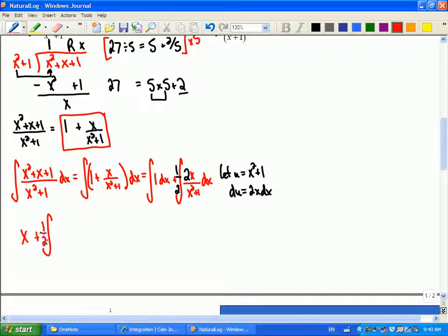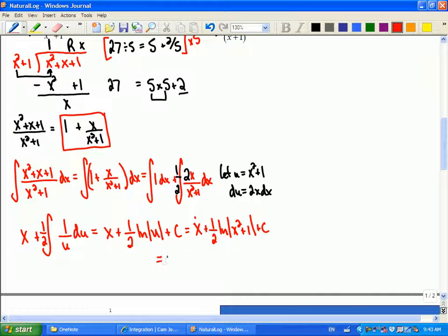So here I'm going to put a 2x, and I need a 1 half in front. So I would end up with x plus the integral, sorry, 1 half the integral of 1 over u du. So x plus 1 half natural log u plus a constant. And to us, that u is worth x squared plus 1. And in this case, you wouldn't need absolute value brackets, because that is always positive. So we could rewrite that as just x plus 1 half natural log x squared plus 1.